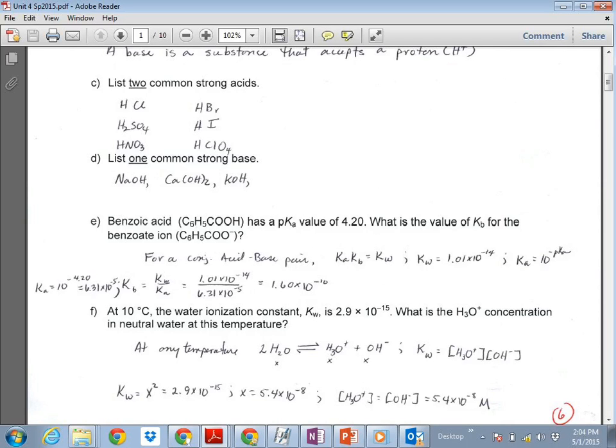So then the last one on there is we talk about at 25 degrees Celsius, Kw is 1.0 times 10 to the minus 14. Well, at a colder temperature, it's even less. And so I wanted you to tell me what the hydronium cation concentration is at that temperature. And it's just the square root of that value, basically.